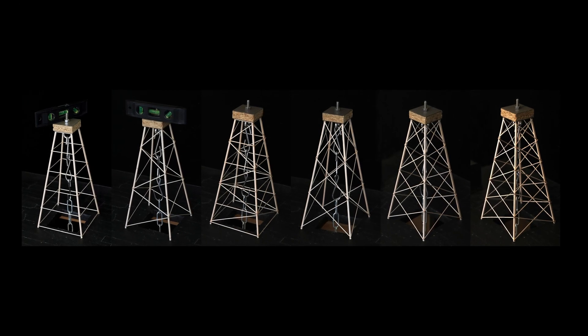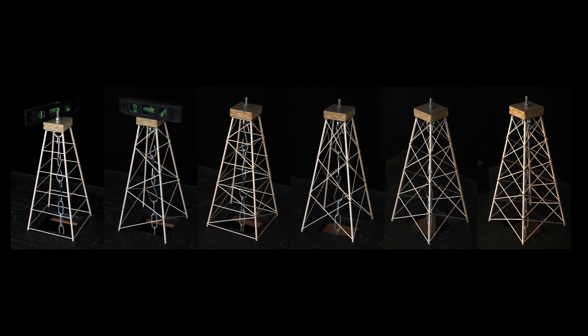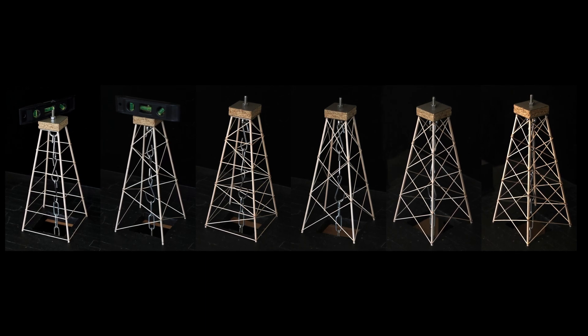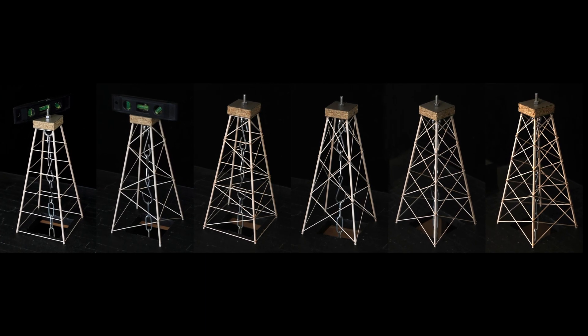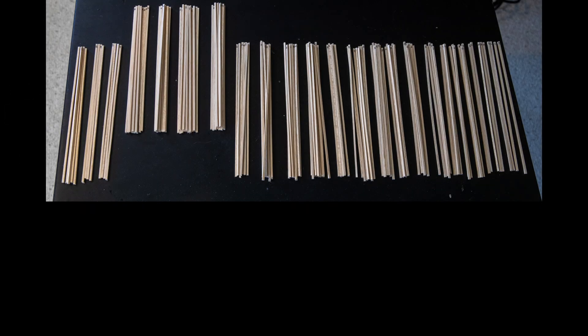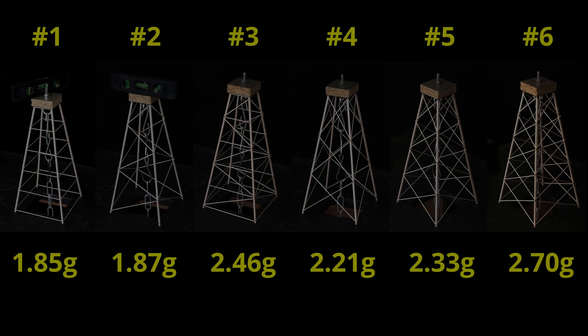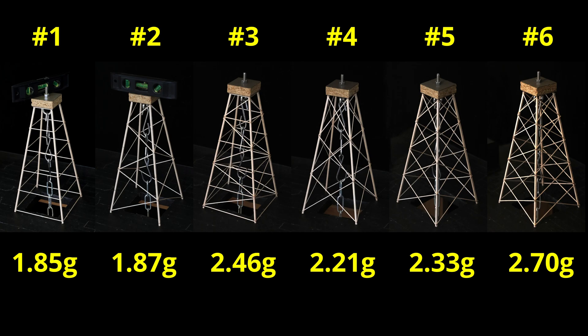In this series of videos, I'm going to explain some of the engineering theory behind tower building and take a very close look at 6 different mini tower builds to see if we can see this theory in action. To compare these builds, I've gone to considerable effort to make sure the legs and cross-member material was as identical as possible and to use a perfect 3D printed jig to try and isolate only the design differences. Here are the masses of each tower shown above.